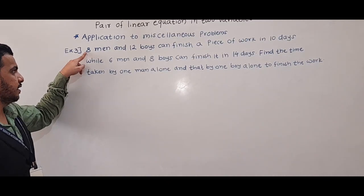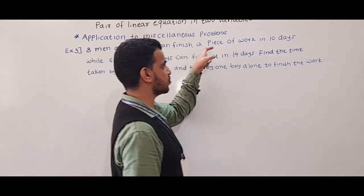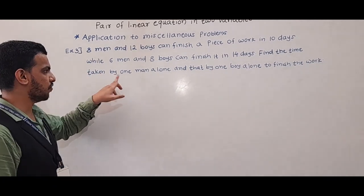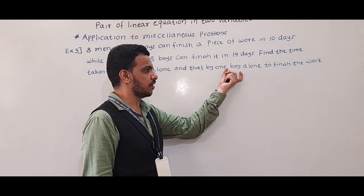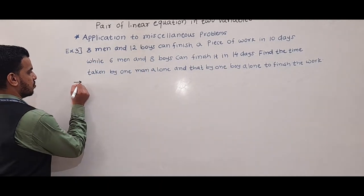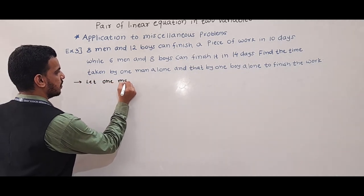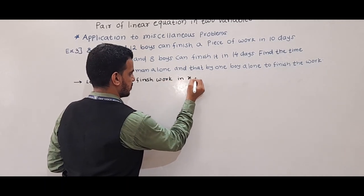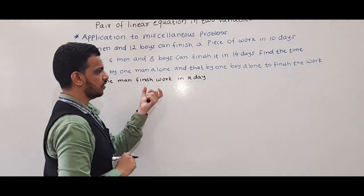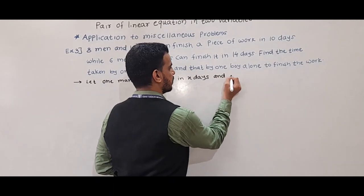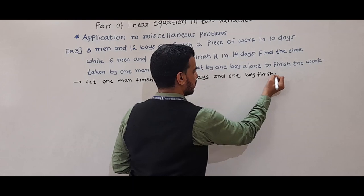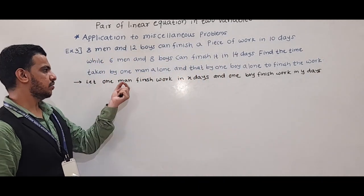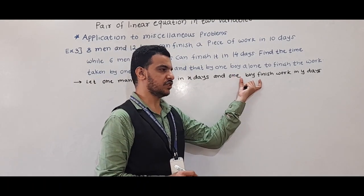Now the third example: 8 men and 12 boys can finish a piece of work in 10 days, while 6 men and 8 boys can finish it in 14 days. Find the time taken by one man alone and one boy alone to finish the work. Let one man alone finish the work in X days, and one boy alone finish the work in Y days.